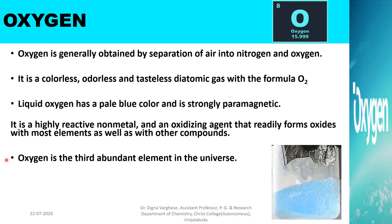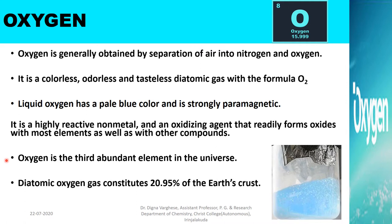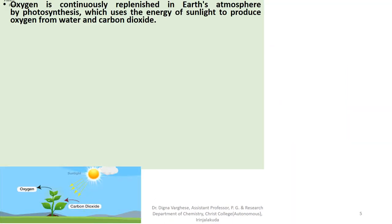Oxygen is a highly reactive non-metal and an oxidizing agent that readily forms oxides with most elements as well as with other compounds. Oxygen is the third most abundant element in the universe. Diatomic oxygen gas constitutes 20.95% of the Earth's atmosphere. Oxygen is continuously replenished in Earth's atmosphere by photosynthesis, which uses the energy of sunlight to produce oxygen from water and carbon dioxide.